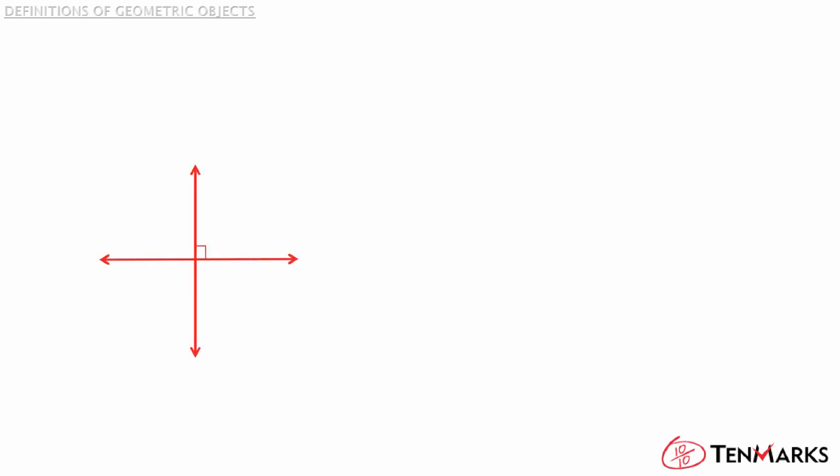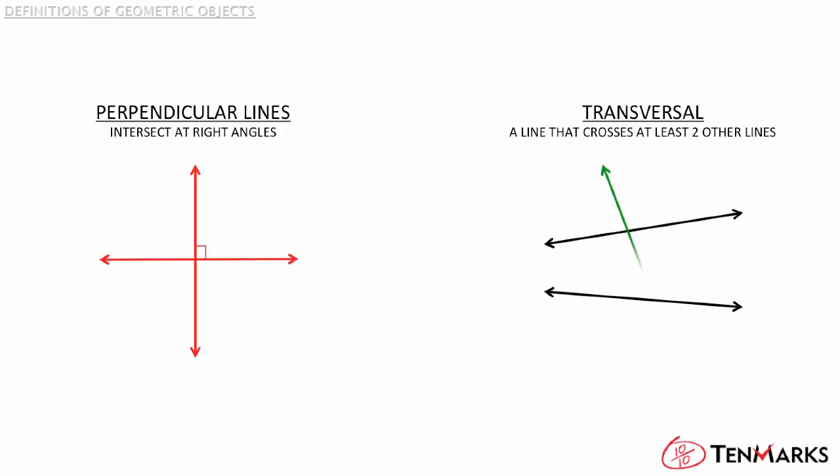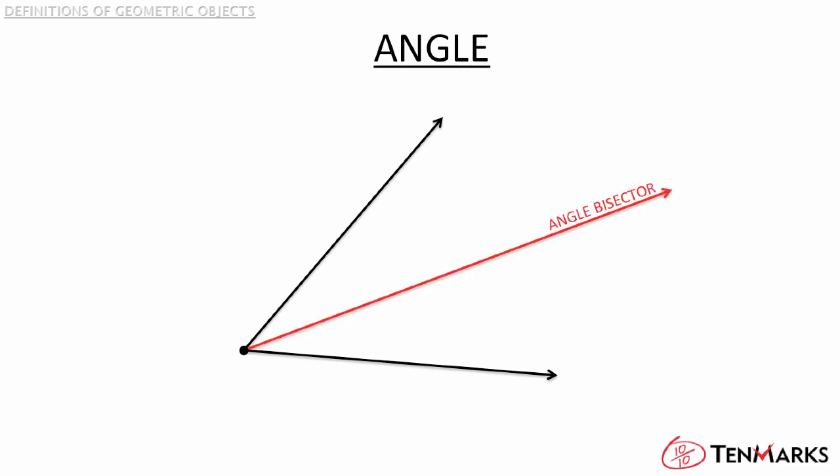If two lines intersect at right angles, they are called perpendicular lines. And a line that crosses at least two other lines is called a transversal. If you take two rays and give them the same endpoint, you have an angle. And an angle bisector is a ray that cuts the angle exactly in half.